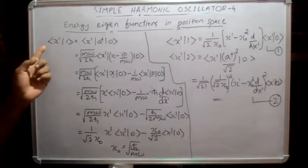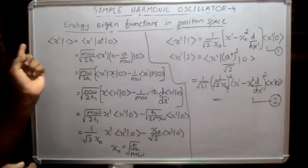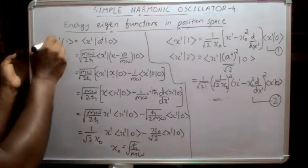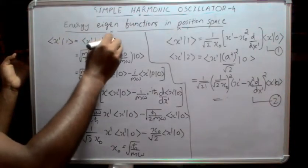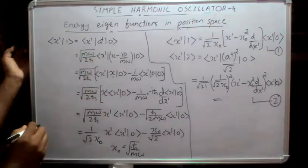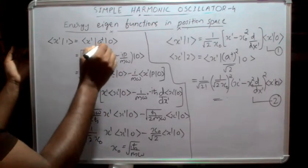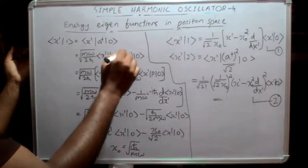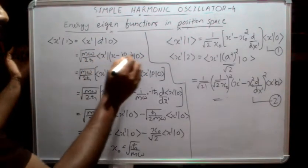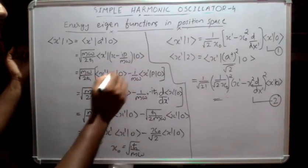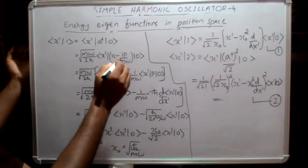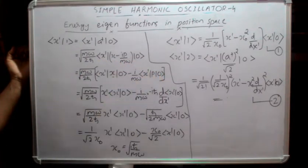In this class we are going to develop the first excited state energy eigenfunction, that is |x',1⟩ = x' a† |0⟩. We can write |1⟩ as a†|0⟩, which equals under root m·ω over 2ℏ, and we know a† = x̂ minus i·p̂ over m·ω. Expanding this term gives x' x̂ |x',0⟩ minus i over m·ω times x' p̂ |x',0⟩.